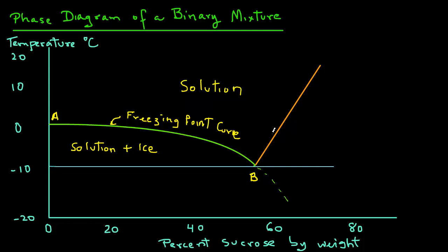Note that A is for 0% sucrose by weight. So A represents a concentration of 0% sucrose. In other words, it's all water, and the freezing point is 0 as we see in this diagram. This curve slopes downward and to the right. This indicates that the freezing point decreases with increasing sucrose concentration in the solution.